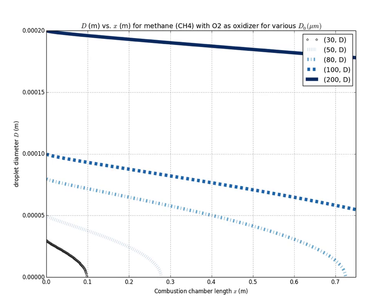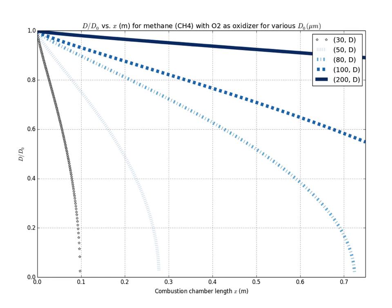Here we have a plot of D normalized to D_0, and we see the same behavior: for D_0 of 80 microns and below, the liquid droplet completely evaporates in the combustion chamber, and combustion is presumably completed entirely within the chamber. For 100 microns and above, some of that liquid droplet exits the combustion chamber.